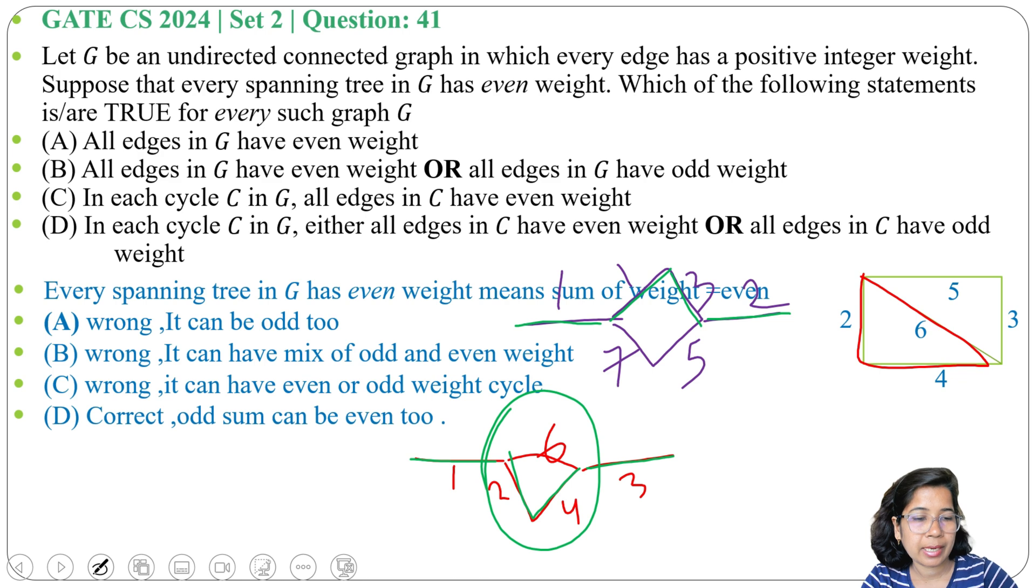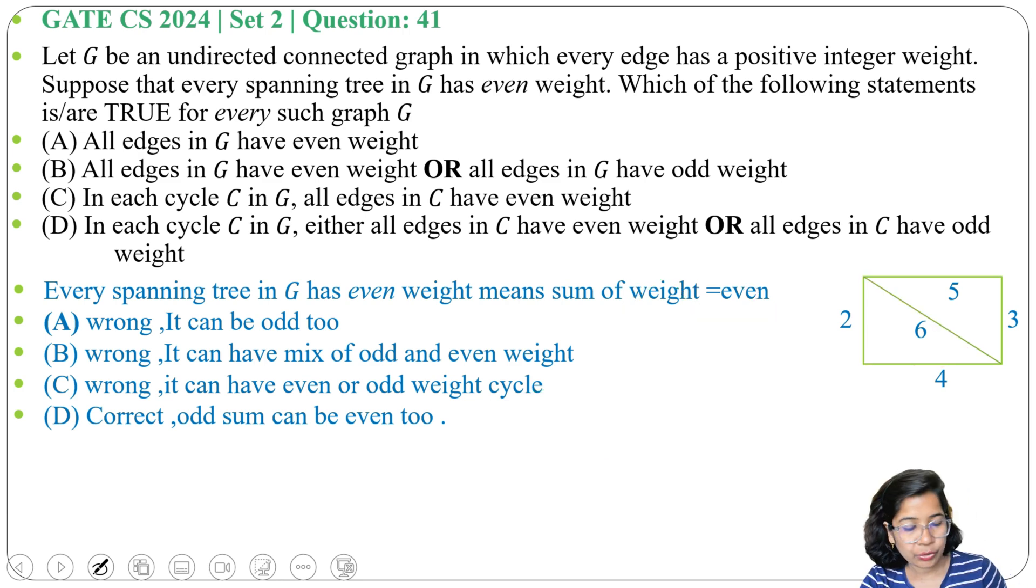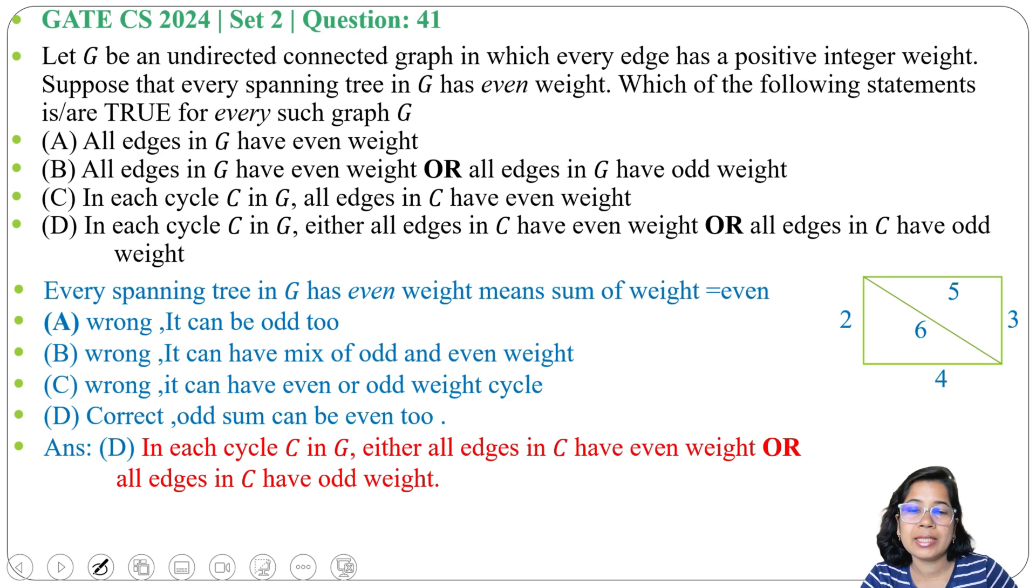So here it's an even weight spanning tree, and in this cycle all weights are odd, right? So there can be either even weight or odd weight. So here answer is option D: in each cycle in G, either all edges in cycle have even weight or all edges in cycle have odd weight. And this question is not asking about minimum spanning tree, it is asking about spanning tree. You can consider any weight, right? There should not be any cycle and it should be connected.